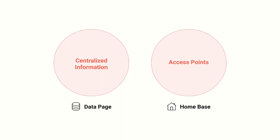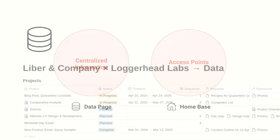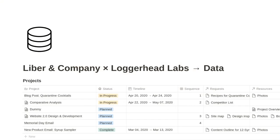Instead, you'll access your information and engage with all of your content through the home page. When you create your data page, you can name it whatever you like — just "data," or some combination of your company's name, your client's name, and the term "data."